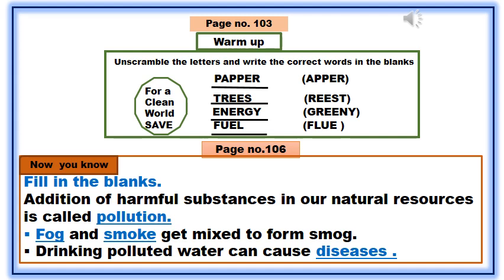Save paper, trees, energy, and fuels. Now move on to page number 106, fill in the blanks: addition of harmful substances in our natural resources is called pollution. Fog and smoke get mixed to form smog. Drinking polluted water can cause diseases.